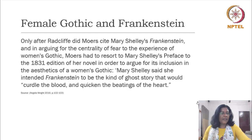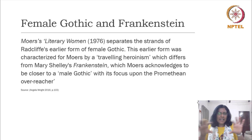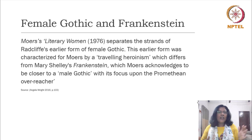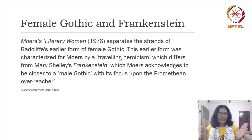Ellen Moers' work Literary Women, published in 1976, differentiates between different strands of female Gothic. In an earlier form characterized by Radcliffe, we have a kind of traveling heroism — a series of moral tests that a heroine faces in order to prove herself and grow up into a mature womanhood. That is a parallel to the male Bildungsroman. This kind of traveling heroism is part of the female Gothic sketched out by Anne Radcliffe.